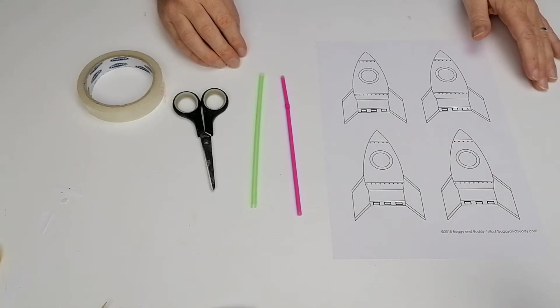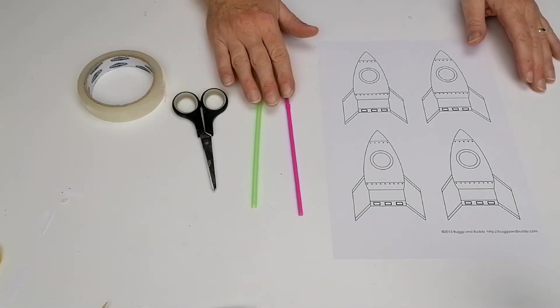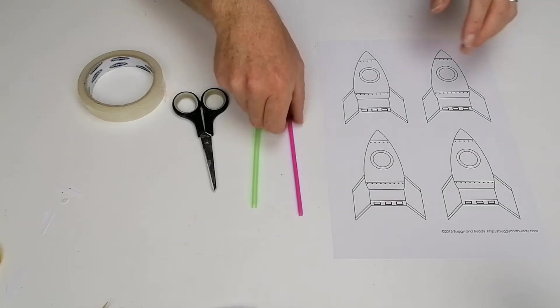In this activity, we're going to make a straw rocket. For that, you're going to need some sellotape, scissors, two different straws, two plastic straws.